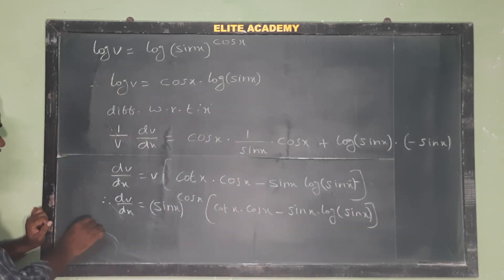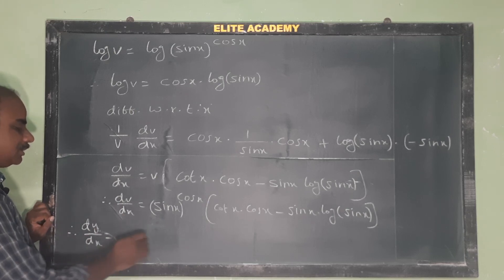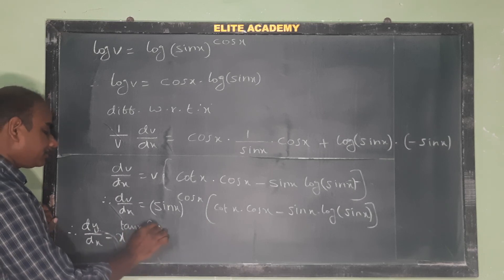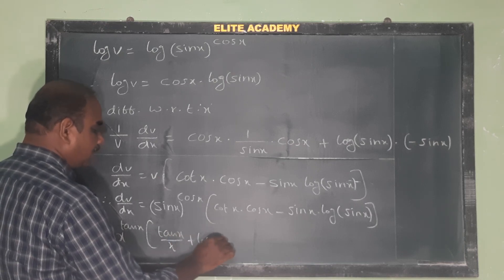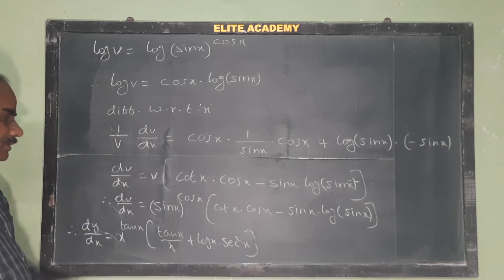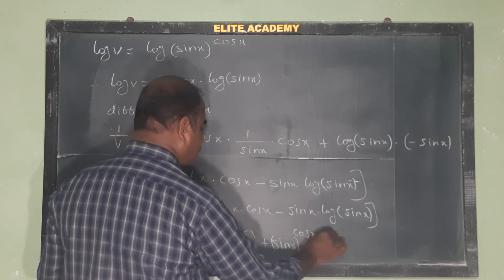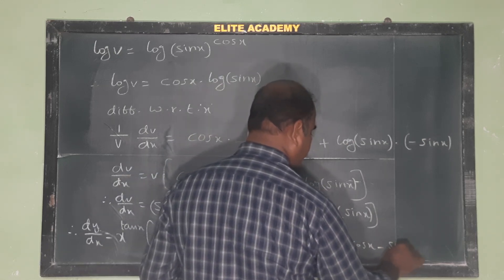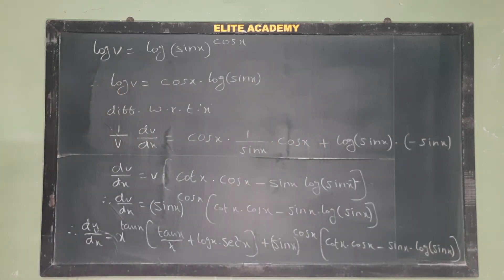So finally dy by dx equals du by dx plus dv by dx. That is: x power tan x into tan x by x plus log x into sec squared x, plus sin x power cos x into cot x into cos x minus sin x into log sin x. This is the answer. Write it down.